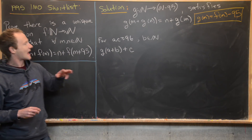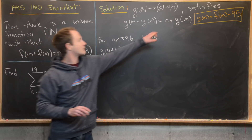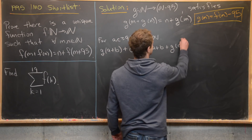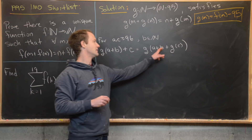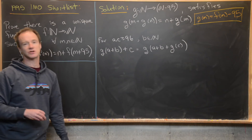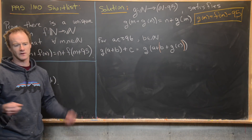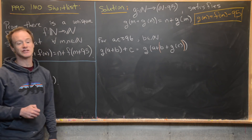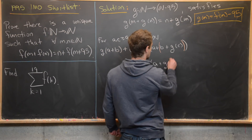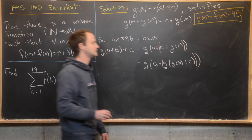Notice that g(a + b + c) looks like the right-hand side of our functional equation, so we can rewrite it as g(a + b) + g(c). Now the inside — a + b + g(c) — looks like the right-hand side again, composed inside g. Applying our functional equation to those peach parentheses gives us g(a + g(g(b + c))).